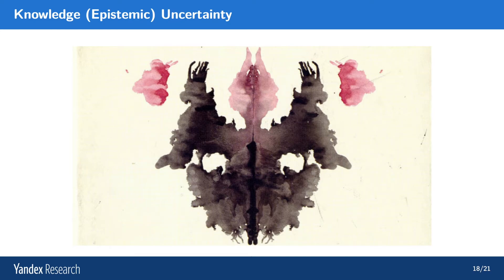An extreme example of knowledge uncertainty is this Rorschach test image. Typically people are asked what they see, and people can say many different things — an angel, a demon, a child with wings, two goats butting heads. The point is, this image doesn't represent anything, but if you ask different people they will say different things because this image is out of distribution for every single person. They will say things consistent with their own internal associations. Similar things will happen if we ask different models — and this will become very important when we talk about how to estimate knowledge uncertainty in the next lecture.